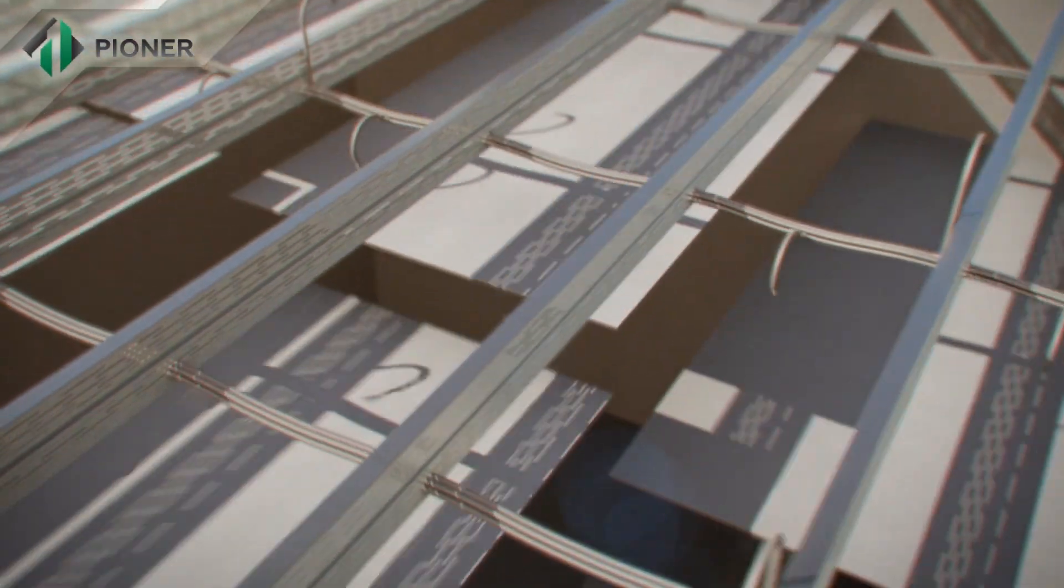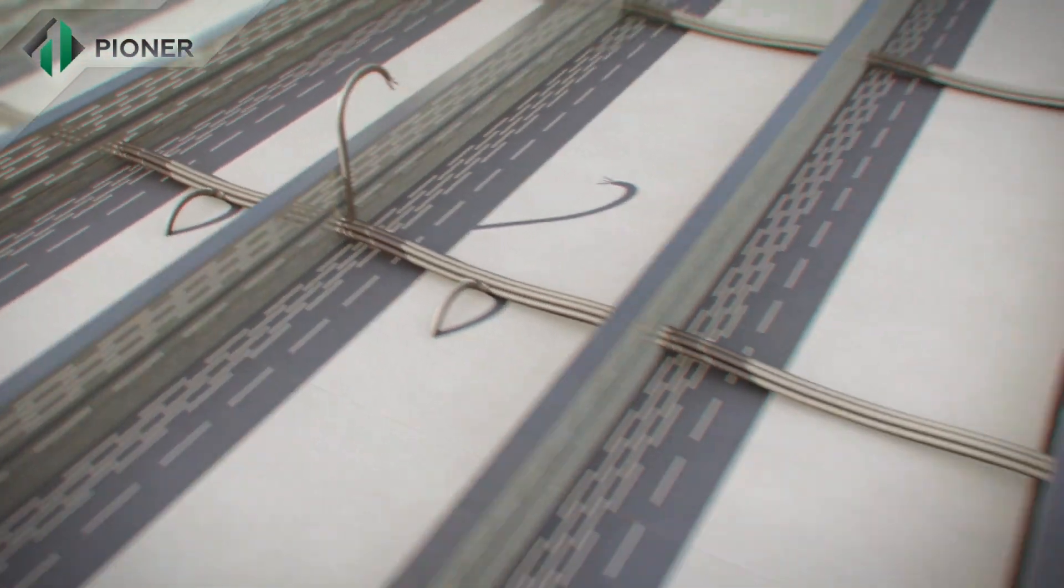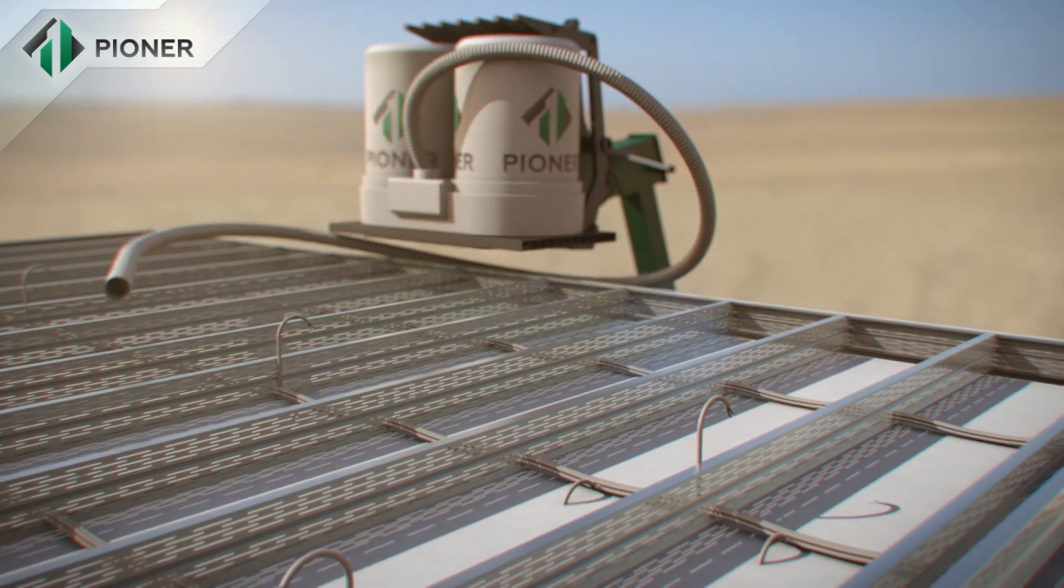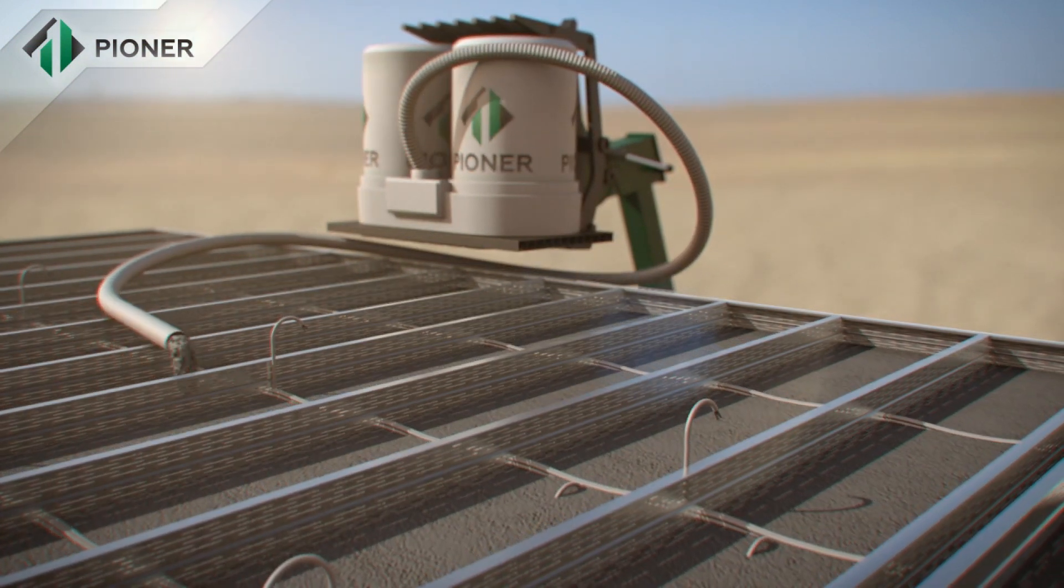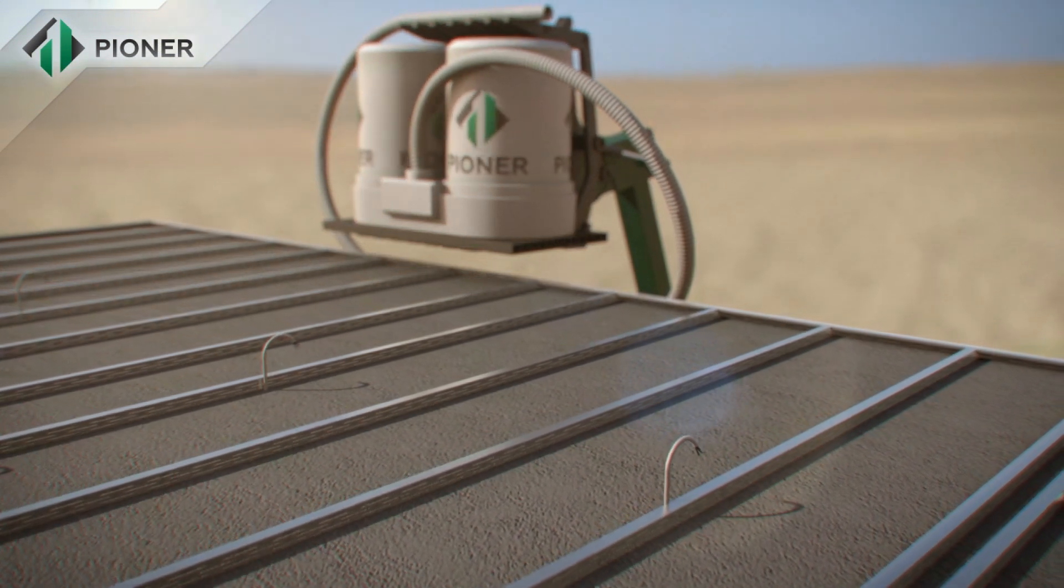Horizontal slabs and flat roofs fixed by Pioneer technology are mounted in a way similar to that for vertical walls. The panels are fixed to a metal frame and the Pioneer mix fills up the space and rises to the required level.